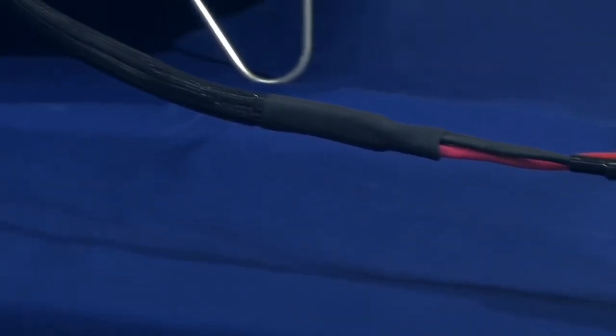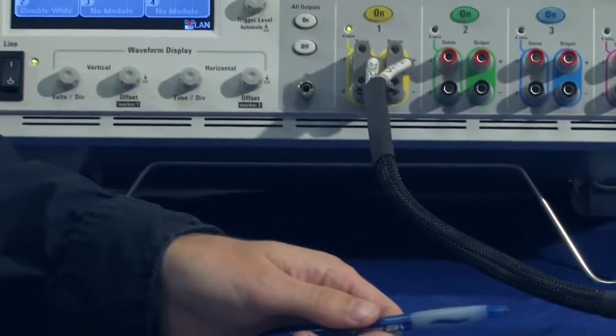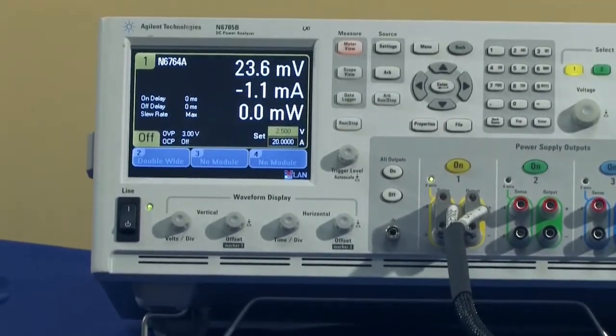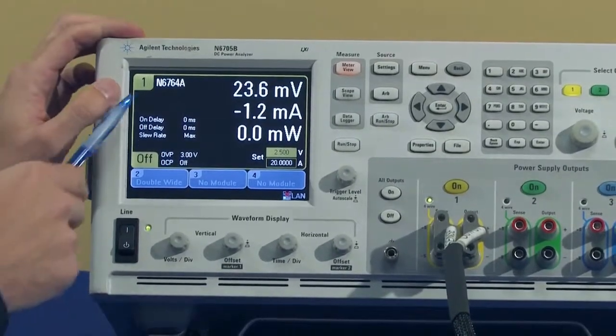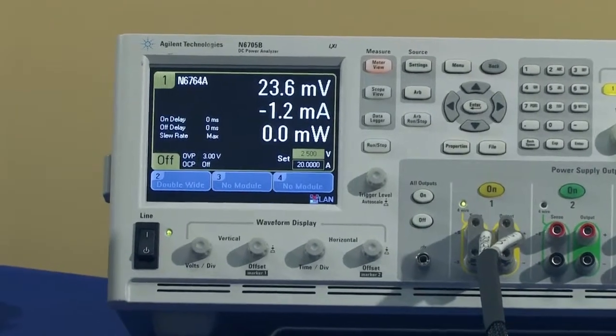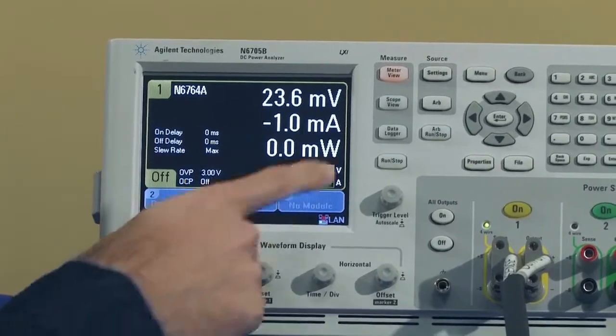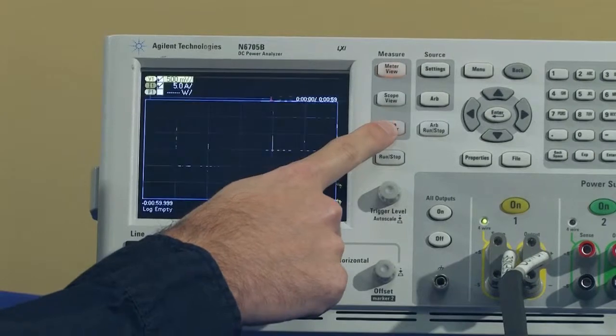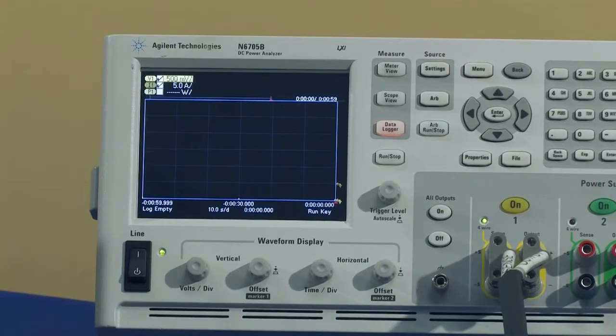So what we're going to do is, this is discharged, we're going to use the DC power analyzer and the N6764A module to charge it. And we're going to use the data logger feature of the DC power analyzer to watch what it looks like as the current goes into the capacitor and the voltage will start to rise.